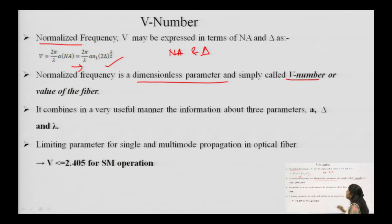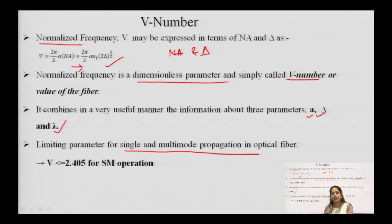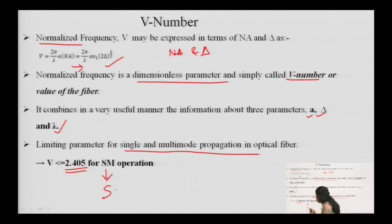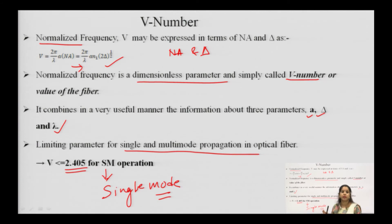That is why V is called the V number or value of the fiber. It carries information about the core radius a, delta, and lambda. It is the limiting parameter for single mode and multimode propagation in optical fiber. For single mode operation, V must satisfy V < 2.405. For multimode fibers, V varies. This value of 2.405 is fixed for single mode fiber and does not change.